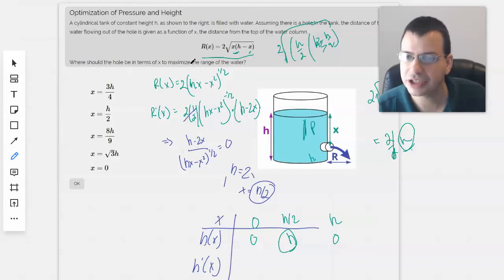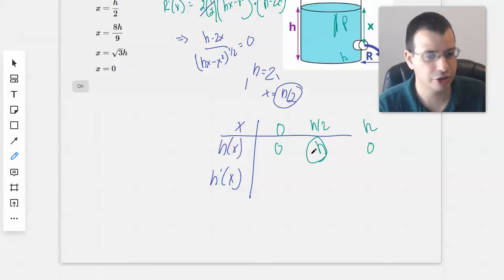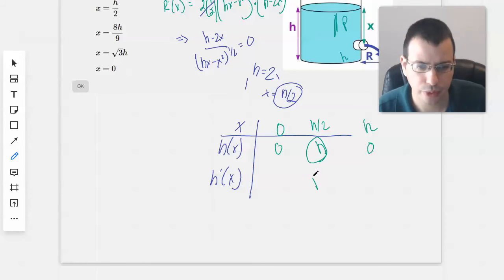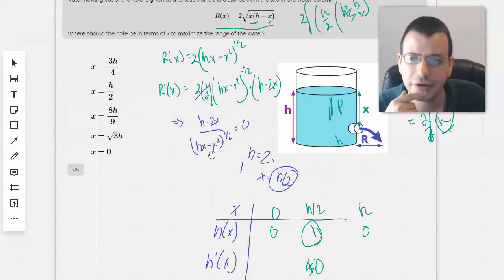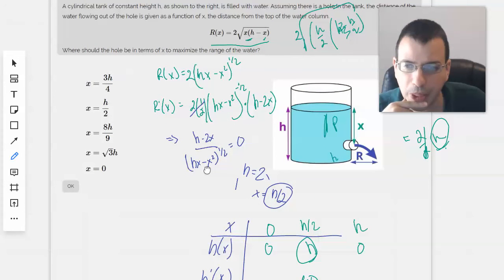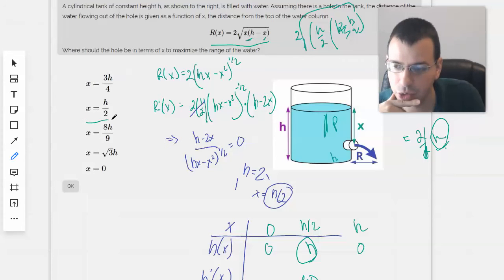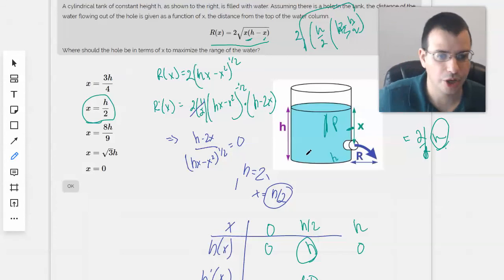But they're asking for the... So, h is greater than 0 in h. This would be 0 when we plug in h over 2 for the derivative. And so, the way that we'd optimize this then would be at x equals h over 2 halfway between the top and the bottom of the water column.